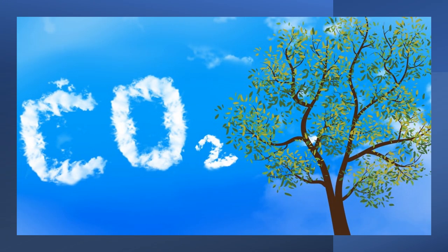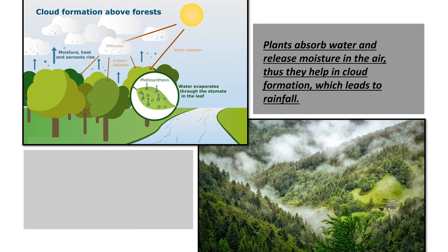Forests are of great importance for us. They absorb huge amounts of carbon dioxide and release oxygen, so they act like a carbon sink. A large forest cover is very important in maintaining the balance between these gases. Plants absorb water and release a lot of moisture into the air, helping in cloud formation. So wherever there is forest, there is a large amount of rainfall, because the moisture accumulates and leads to cloud formation that brings rainfall.